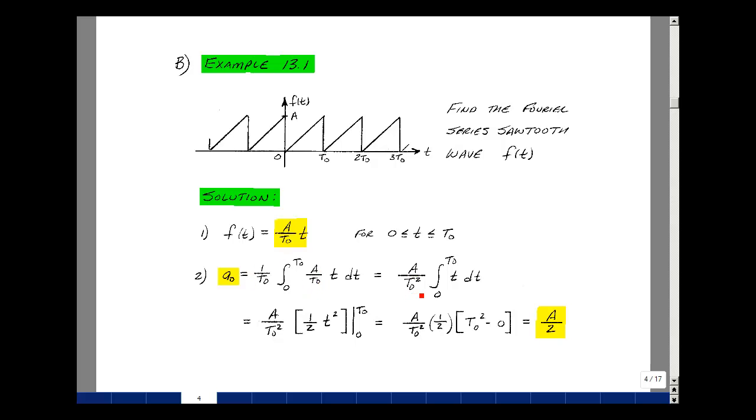I have a over t0 squared, and then the integral from 0 to t0 of t dt. The integral of t dt is 1 half t squared, upper limit minus the lower limit, t0 squared minus 0 squared. The t0 squares cancel, and I'm just left with a over 2.